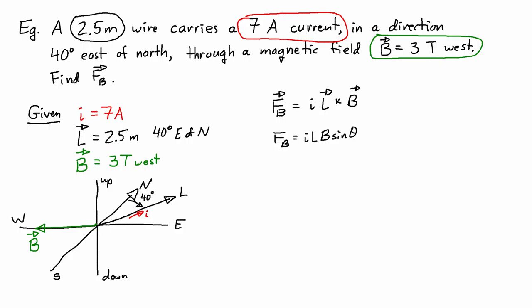Looking at the diagram, it's easier for me to use the second form of the equation because I know the current, I know the length, and I know the magnetic field. So the only unknown is the angle between them.